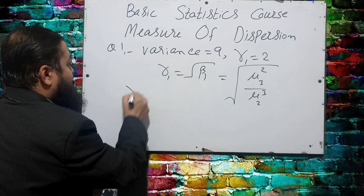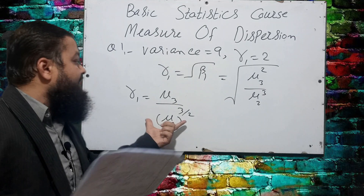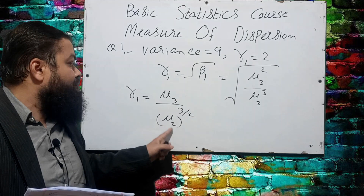Cancelling the square of μ₃ with the square root, γ₁ = μ₃ / μ₂^(3/2). That is the formula. To be clear: β₁ = μ₃² / μ₂³, and γ₁, which is √β₁, equals the third moment about the mean divided by μ₂ to the power 3/2.